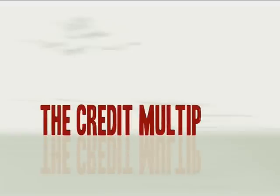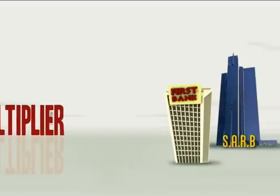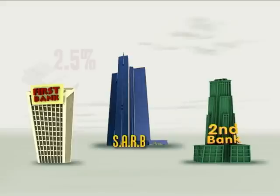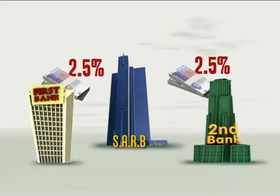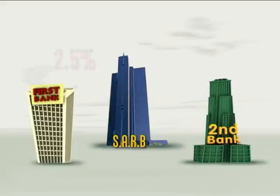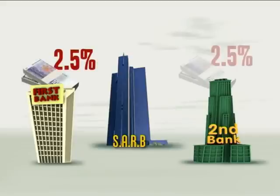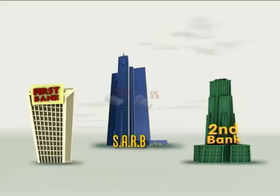There are limits to the amount of money that banks can create. Banks are required to keep a cash reserve of 2.5% of deposits with the South African Reserve Bank. So each new loan is 2.5% less than the last, and this creates the limit on how much money banks can create.